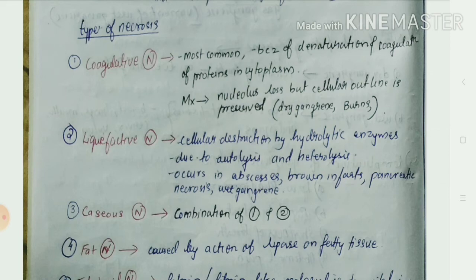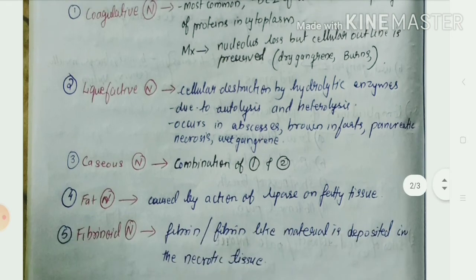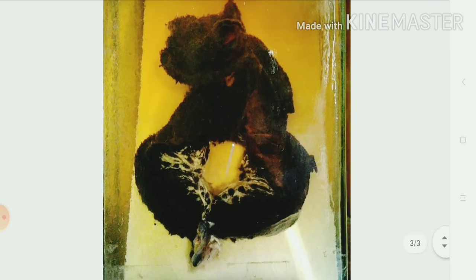Caseous necrosis is a combination of coagulative necrosis and liquefactive necrosis — it is also called combined necrosis. Fat necrosis is caused by the action of lipase on fatty tissue. Fibrinoid necrosis involves deposition of fibrin or fibrin-like structures in the necrotic area.